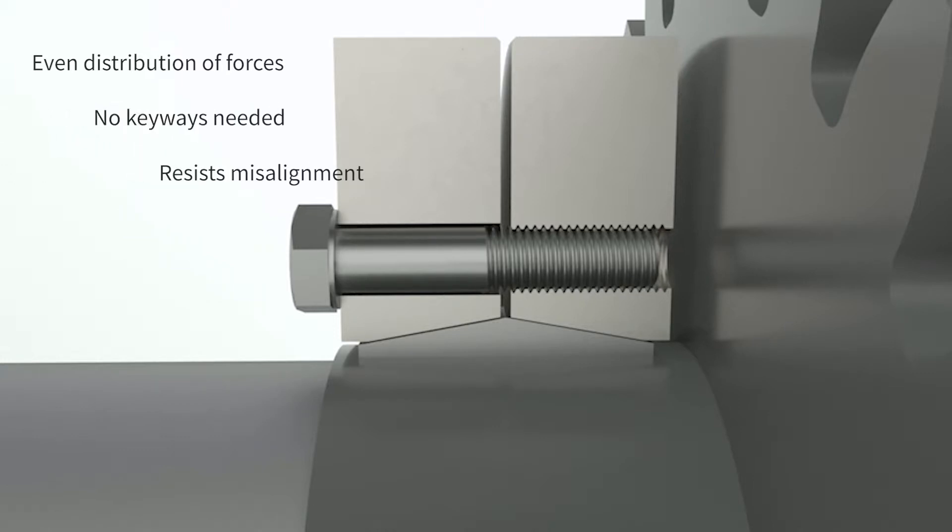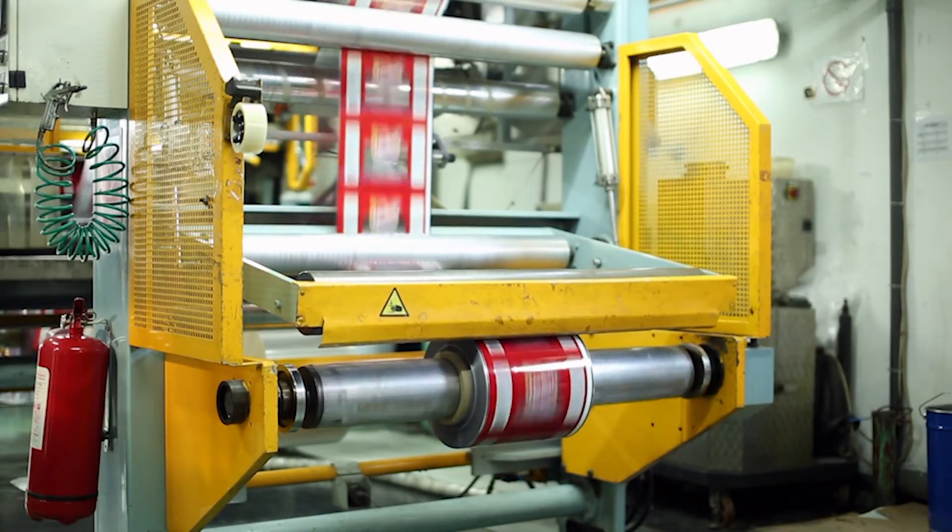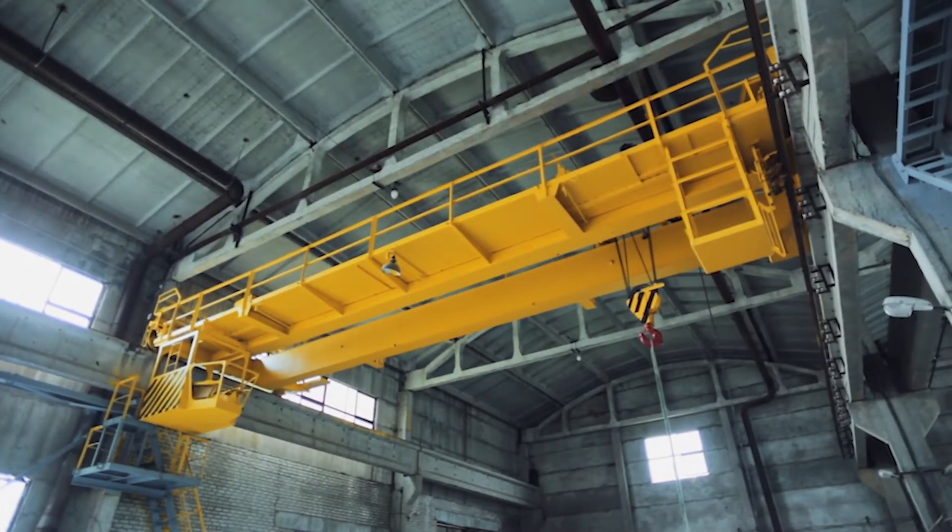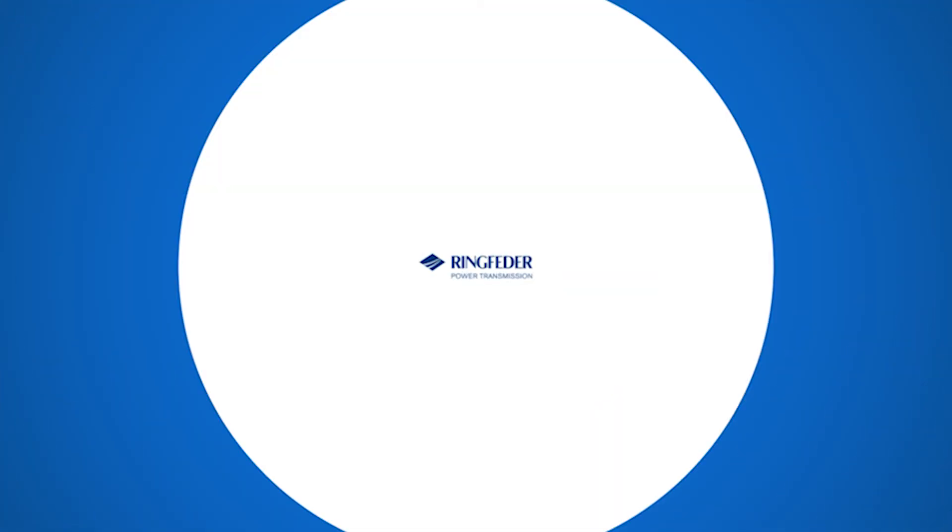Eliminating keyed connections makes a difference in a wide variety of high-torque shaft applications, from packaging machines to cranes and hoists. Learn more about shrink discs and locking assemblies at ringfetter.com.